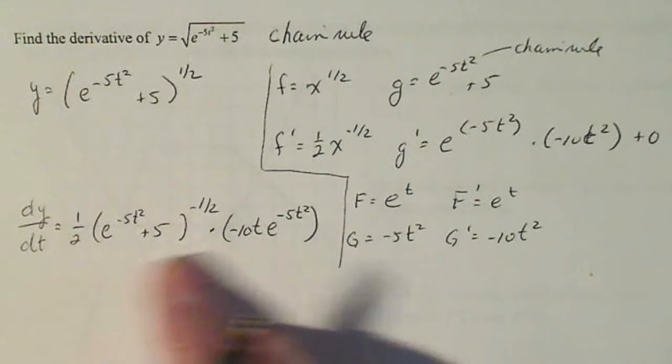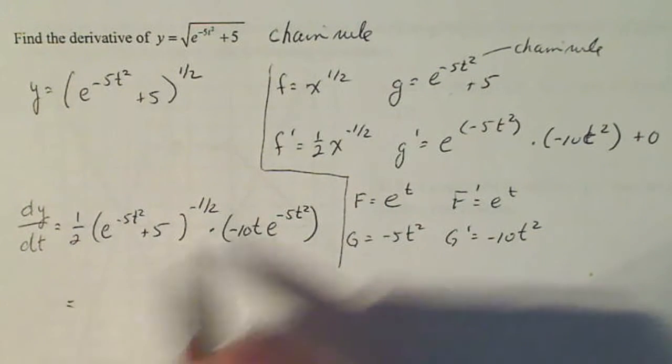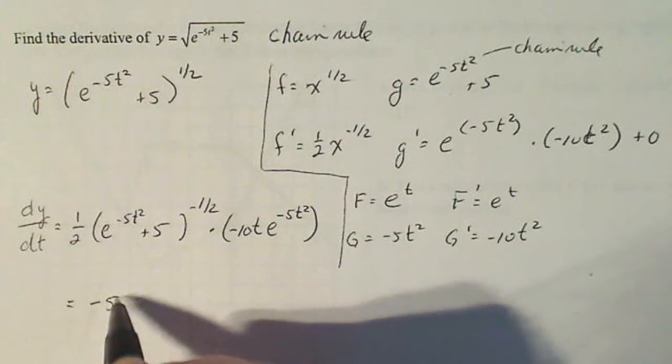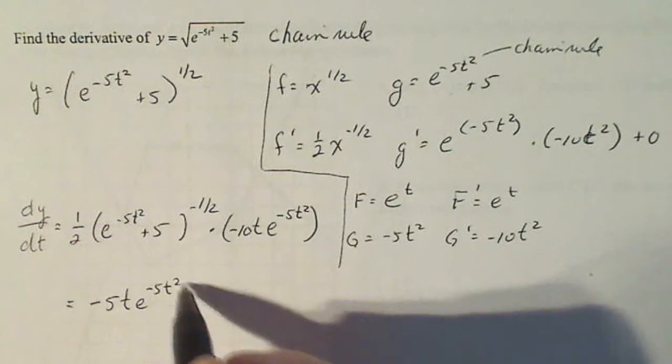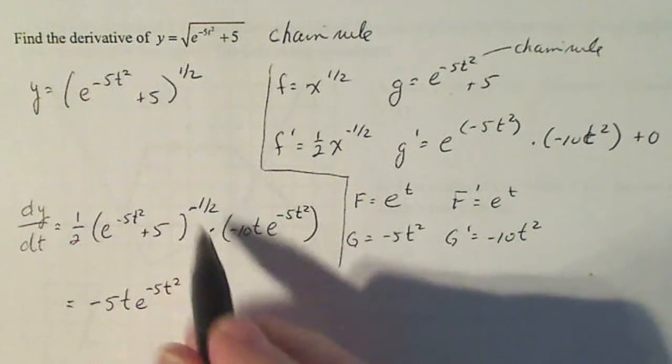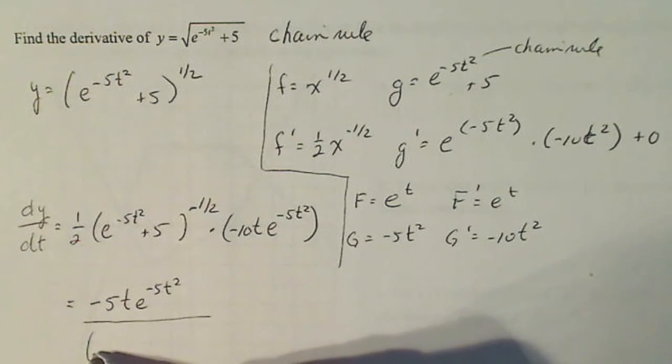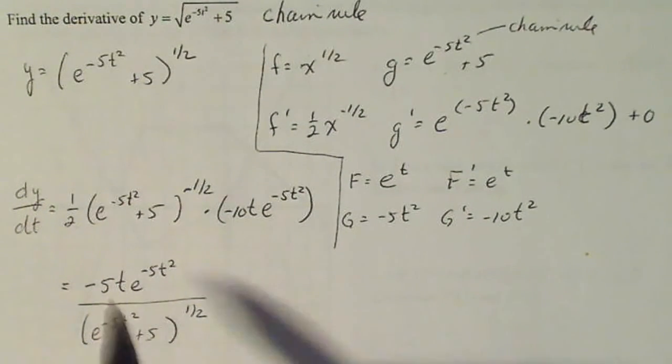Now that's just the calculus done. Derivative is completed. It can be simplified though. So the one half and the 10 simplifies to minus five. The t comes along, e to the minus five t squared. And since that's a negative right there, that whole term drops to the bottom. E to the minus five t squared plus five to the one half. And of course, depending on your teacher or whatever, you can write that as a square root symbol. And that's fine as well.